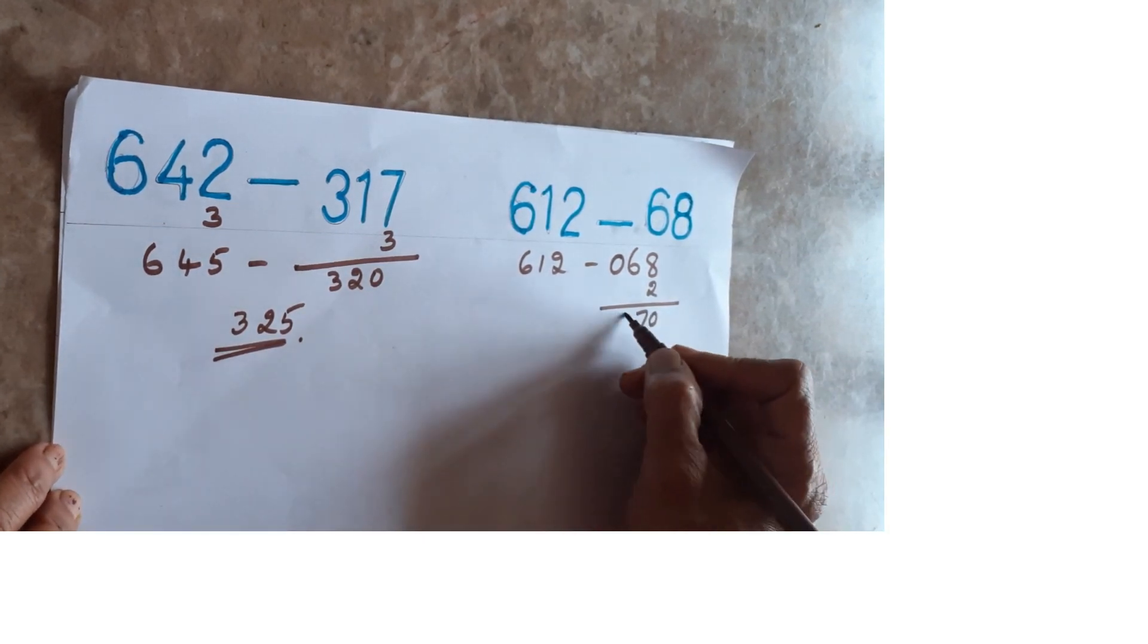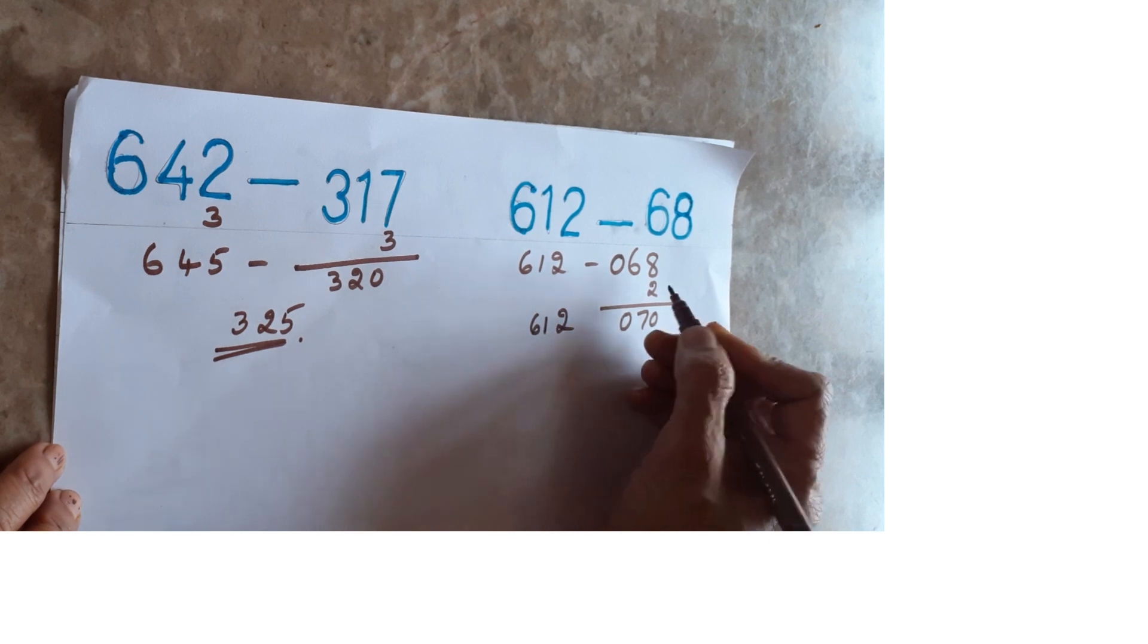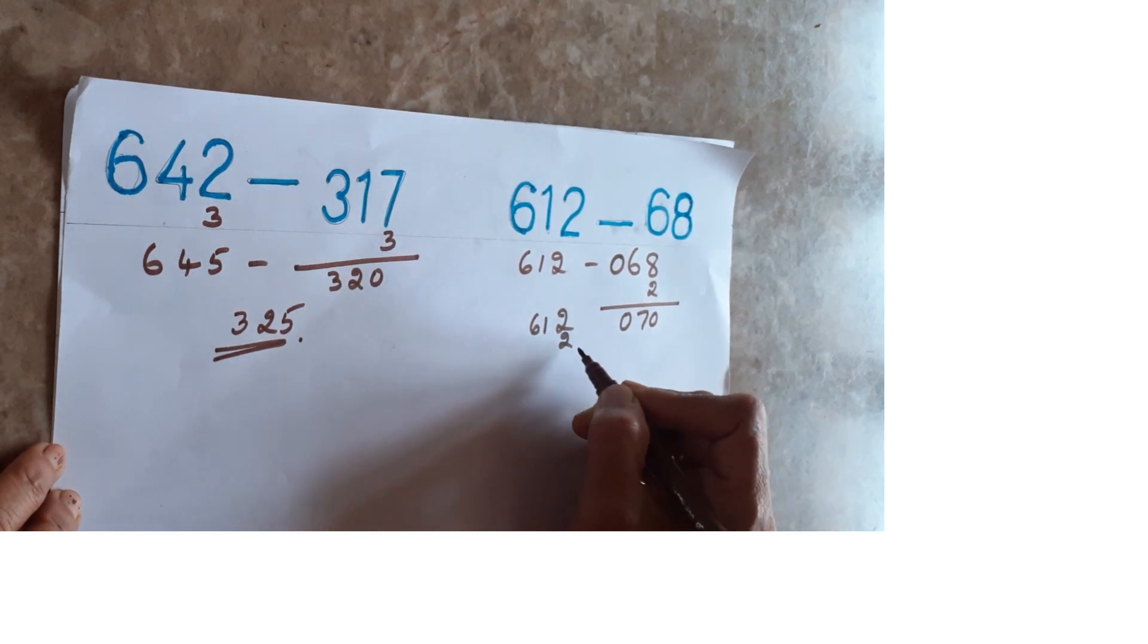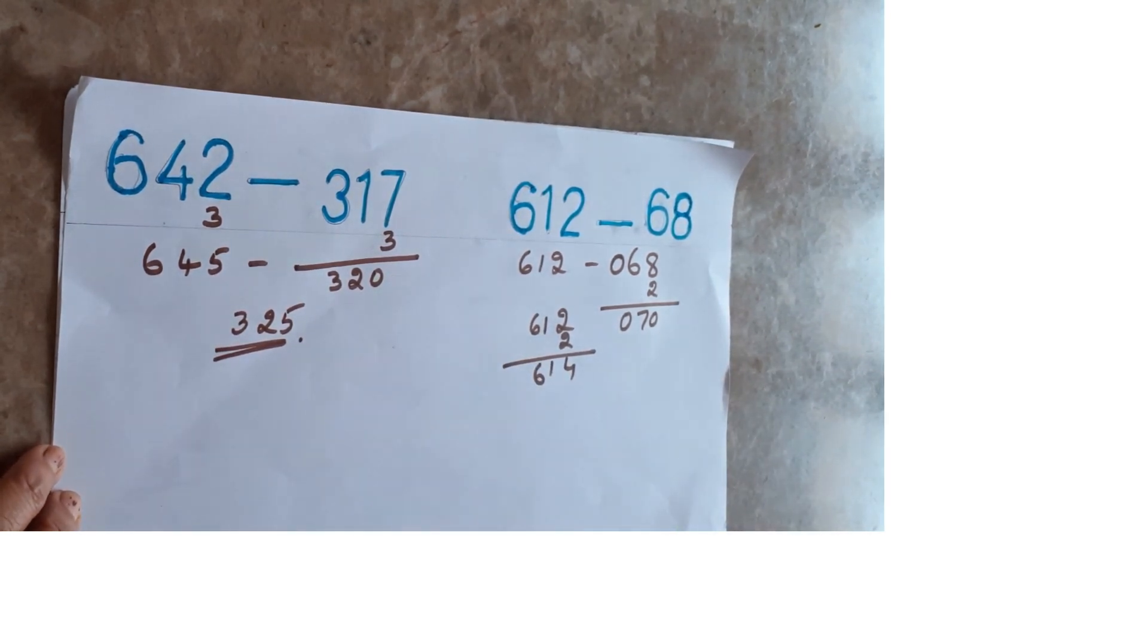70, 0, 70. Here it will become 612. Here also same number you should add 2. 614 here.